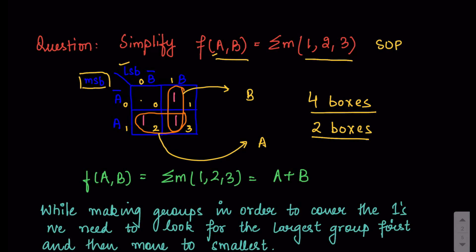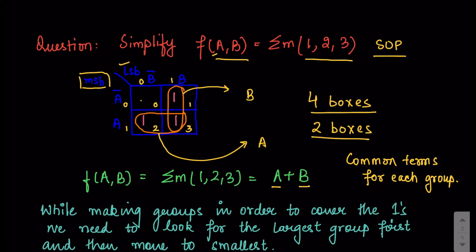Now we write down the answers by fetching the common terms for each group. For the first group, looking at the two boxes, the term that changes is not common, but on the LSB side B is the common variable for both terms — so the first answer is B. Similarly for the next group the answer is A. Because this is SOP the result has a sum sign, giving A plus B.